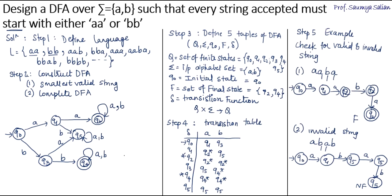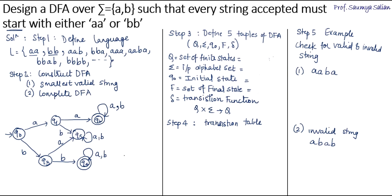We have defined the five tuples and mentioned all the states. Next we complete the transition table. Finally, the last step is checking an example — taking a valid string and an invalid string to verify whether the DFA accepts the valid string and rejects the invalid string. This completes the five steps.